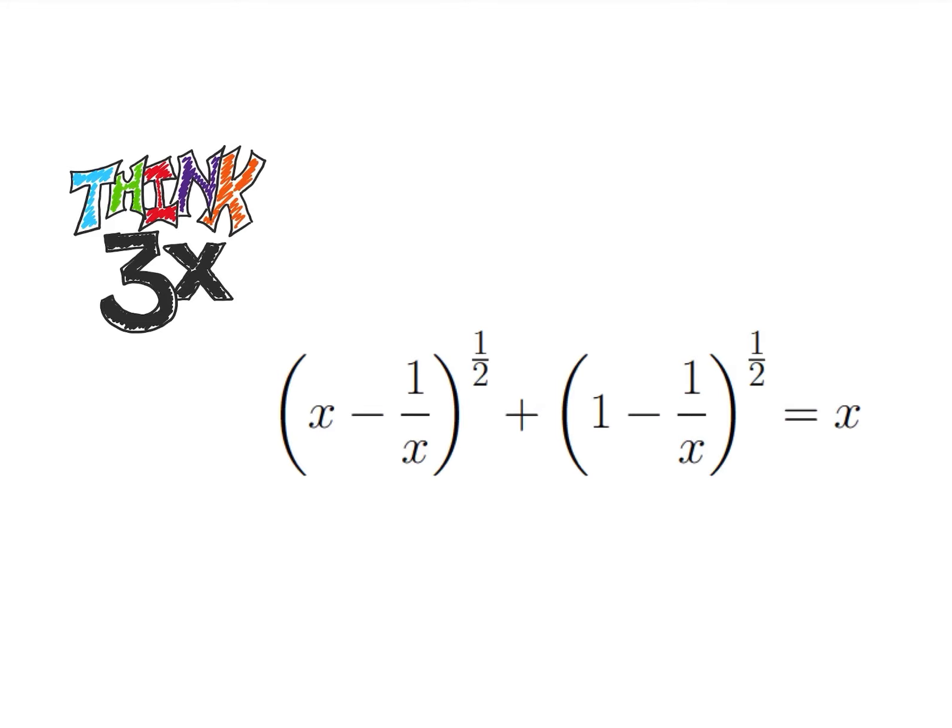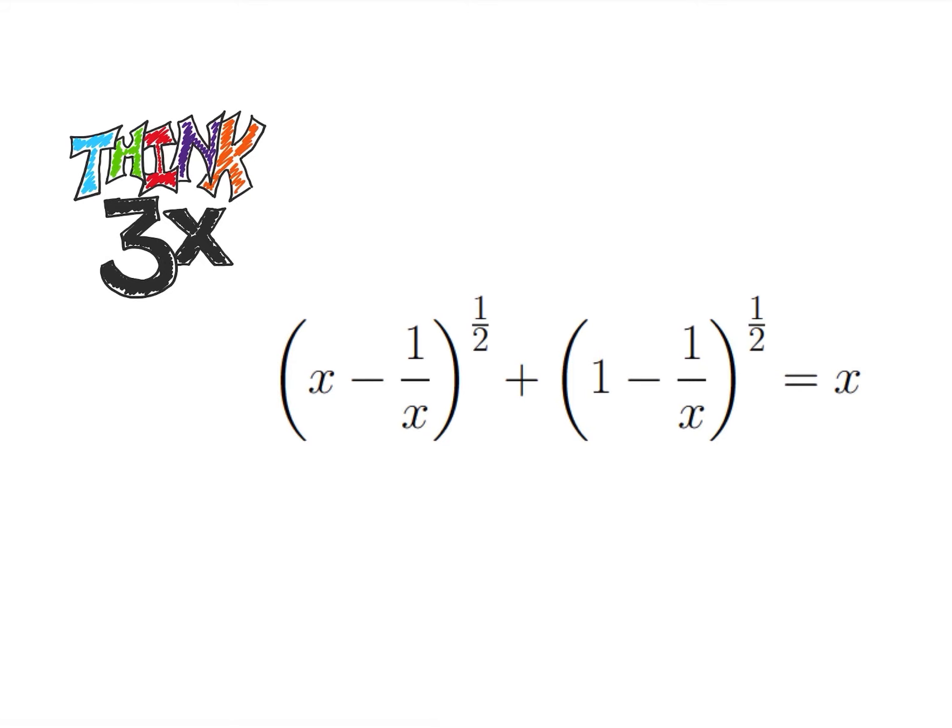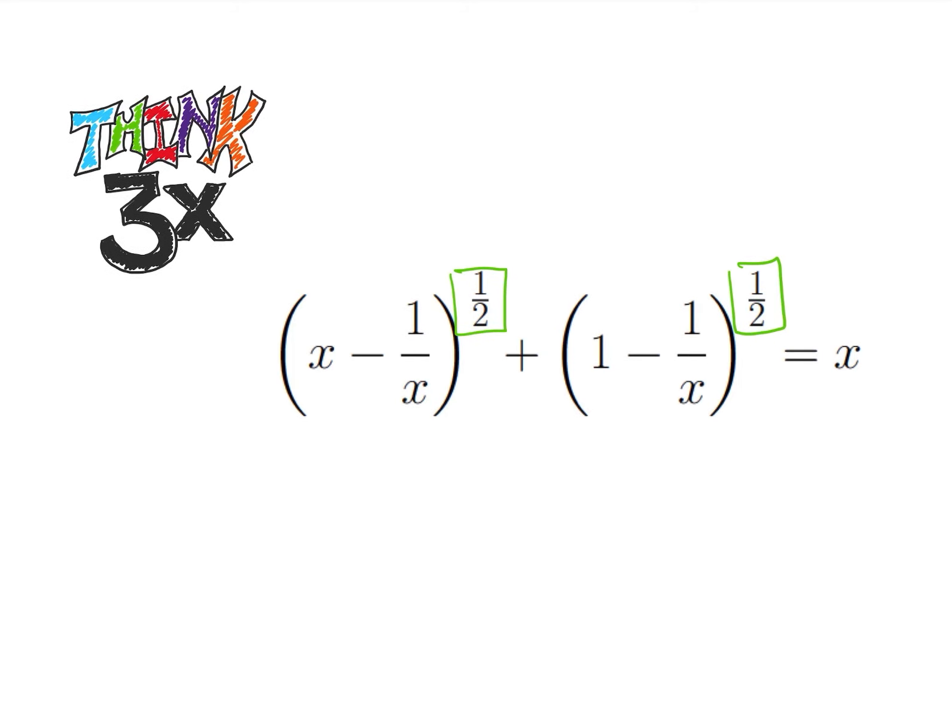Pause the video if you'd like to try this on your own. Otherwise, we'll go ahead and jump in and get started. So the first thing I notice is that I have these square roots up here in the exponent. It would be really nice if I could get rid of those. How do we get rid of square roots? Well, one thing we could do is work on multiplying conjugates. So remember, if I multiply a plus b times a minus b, that's going to be equal to a squared minus b squared.